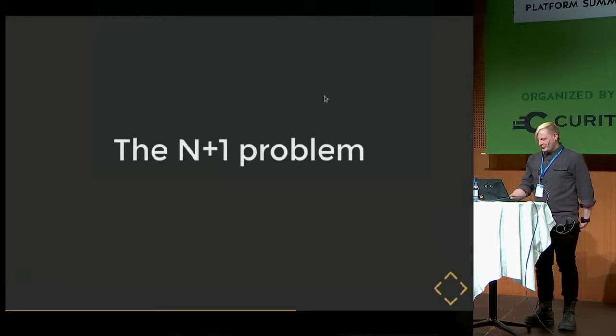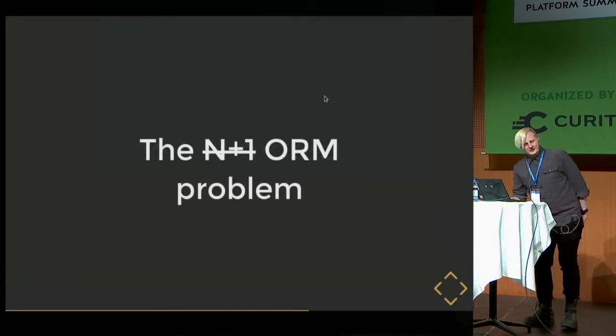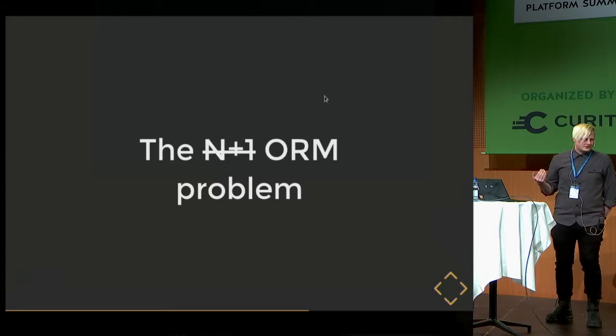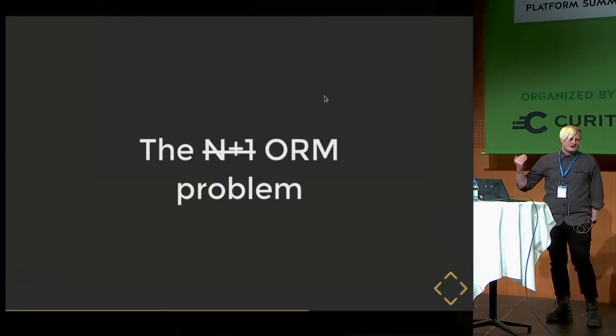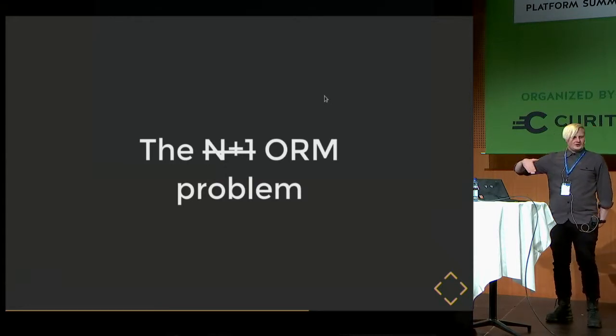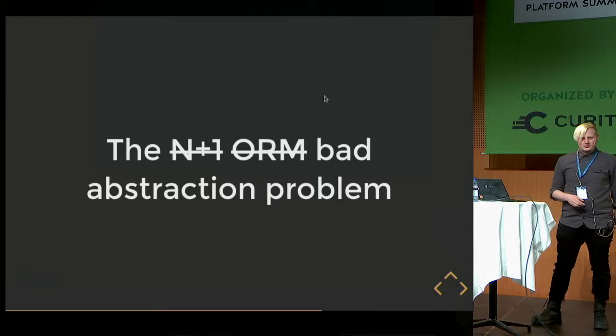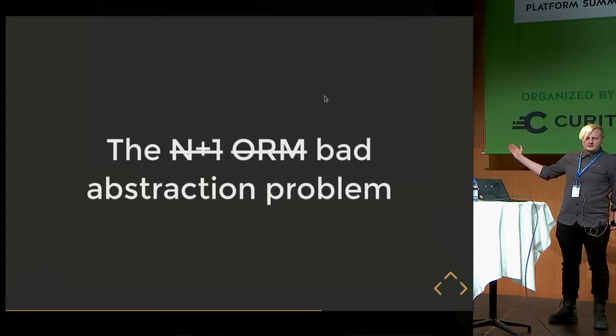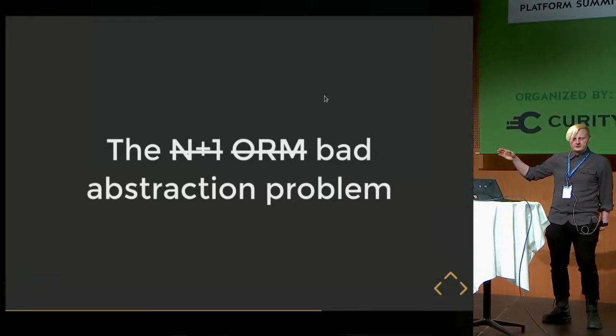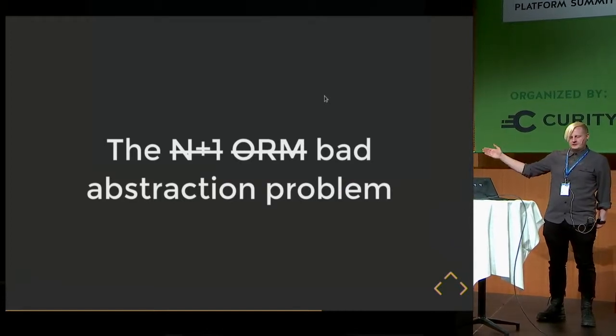Before, I would have called this not the N+1 problem but the ORM problem, because this kind of thing happens when you have an ORM on top of a SQL database — it does not give you access to the nicer abstraction that joins give you, which can tell the system to give you back exactly what you wanted. But these days ORMs are maybe not the most relevant thing — it's a more general bad abstraction problem. You can get the exact same problem in an API if you design it so that you have to do lookups in several steps.